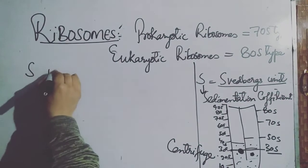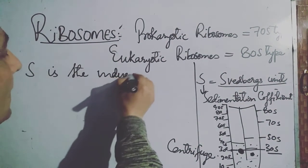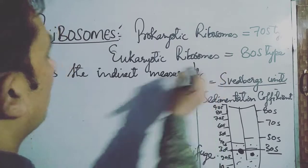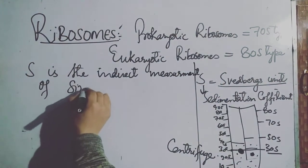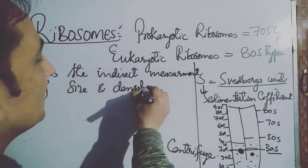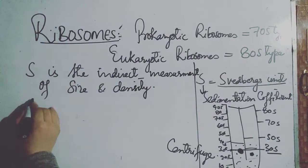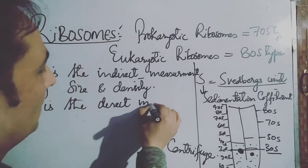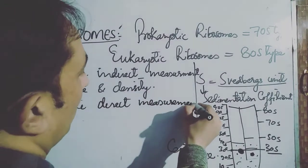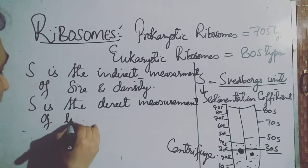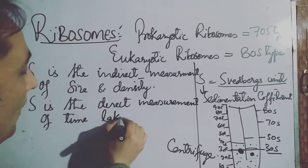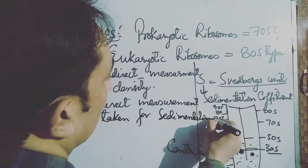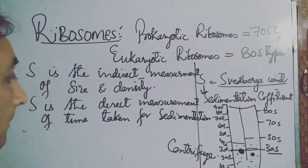S is the indirect measurement of size and density. Indirectly, S measures size and density. However, directly, S is the measurement of time taken for sedimentation — the direct measurement of time taken for a particle or material to sediment.